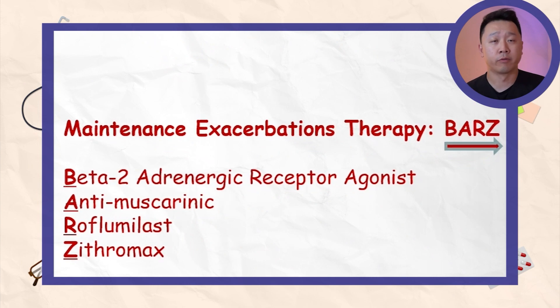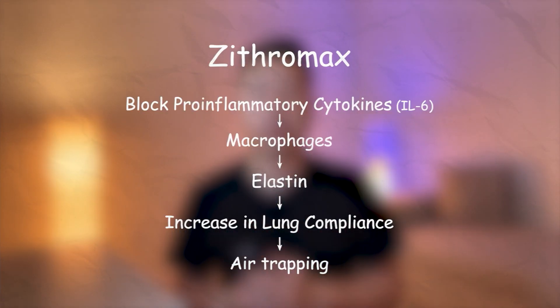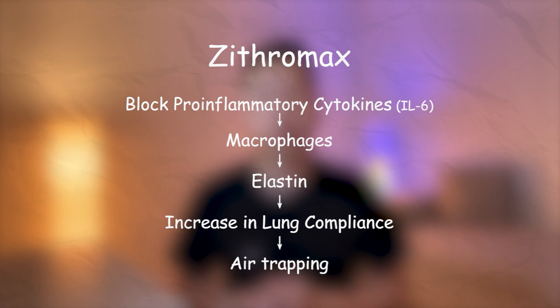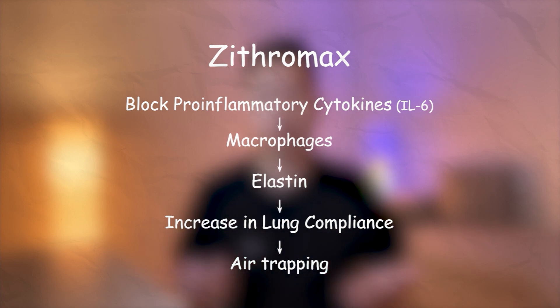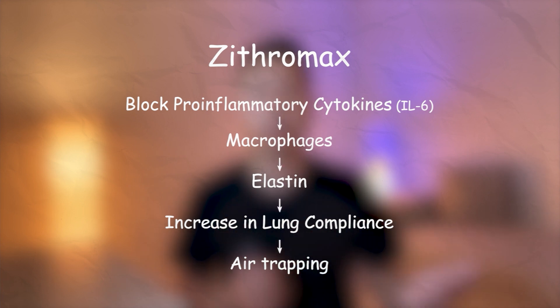For the maintenance therapy for exacerbation, the acronym spells out BARS, going from left to right: B for Beta-2 adrenergic receptor agonist, A for anti-muscarinic agonist, R for roflumilast, and Z for Zithromax. Zithromax blocks pro-inflammatory cytokines such as interleukin-6. Interleukin-6 recruits macrophages, which leads to destruction of elastin, increasing lung compliance. Increased lung compliance decreases the lung's ability to exchange air, causing further exacerbation.